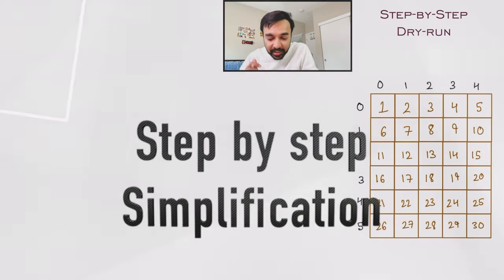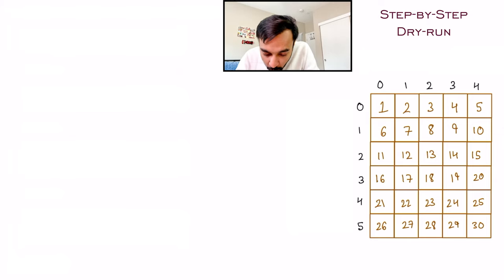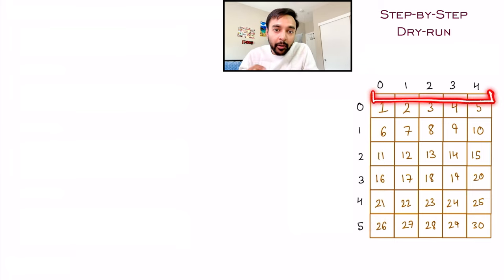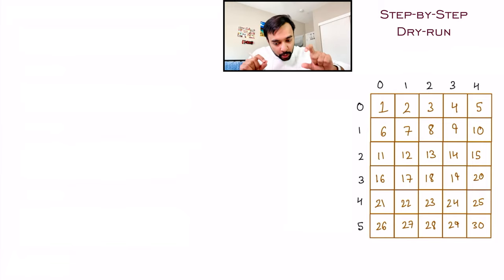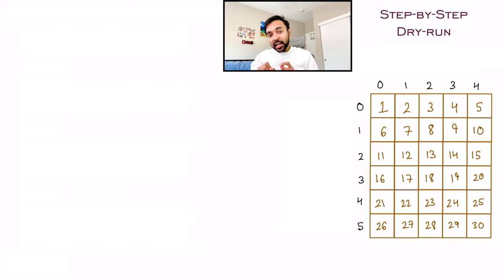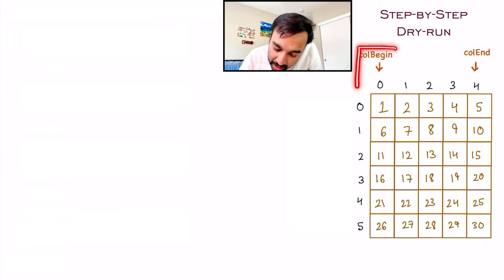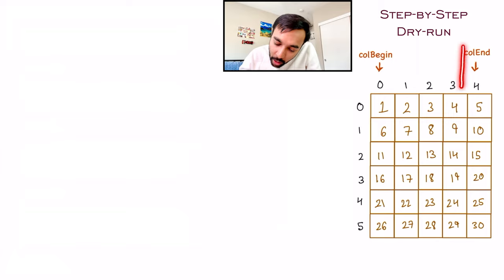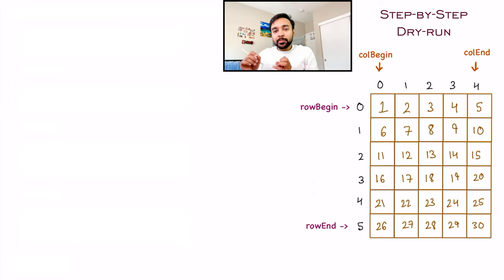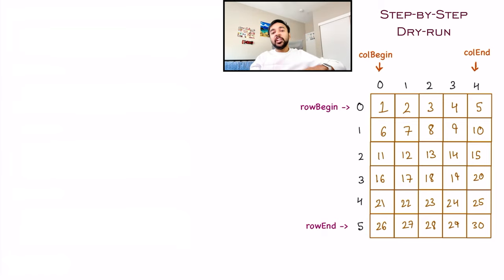So, what I have here is the original matrix with 6 rows and 5 columns. You can see all the row indices starting from 0 all the way to 5, and all the column indices starting from 0 all the way to 4. You can refer to any element in your matrix — for example, the element at row 2 and column 1 will be 12. Now, I am going to initialize some variables: column_begin = 0, column_end = 4, row_begin = 0, and row_end = 5. These variables define your beginning and ending rows and columns.